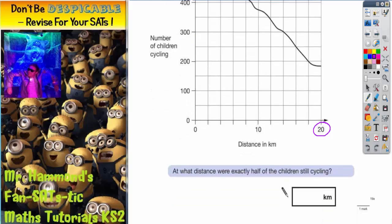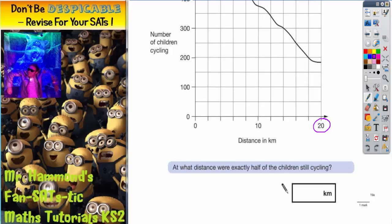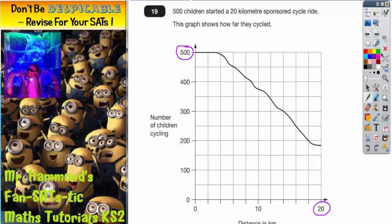So if we scroll down to the question it says at what distance were exactly half of the children still cycling? So what we might want to do first of all is to decide what the scale is on the graph. Now you don't have to write this on, but I'm going to write it on just to show you.